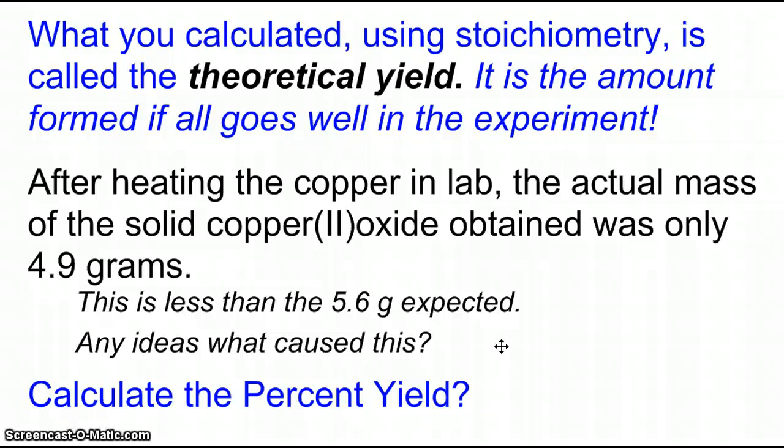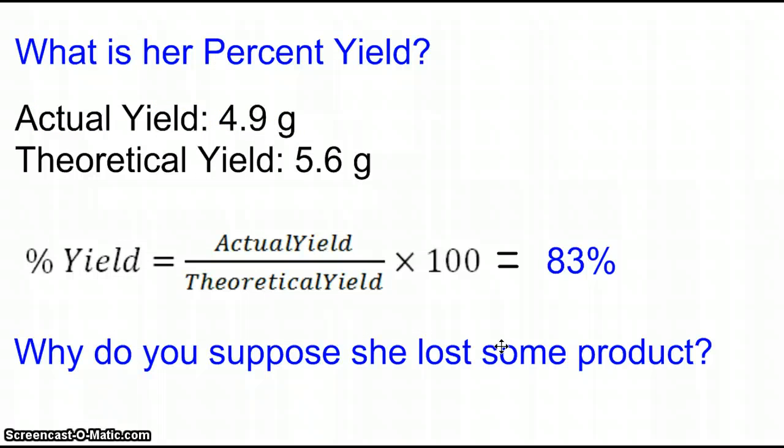Percent yield is, like any percent, the part over the whole. Well, since it's percent yield, we're trying to find out, what percentage did I make out of what I was supposed to make? How did you do? Were you able to take the actual yield, divide by the theoretical yield, and calculate 83% yield? Clearly, she did not obtain what she would have liked to obtain, 100%.